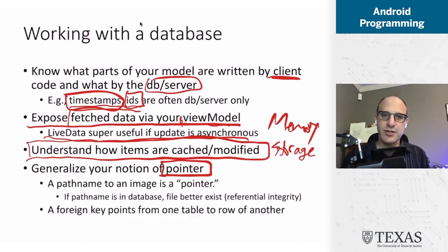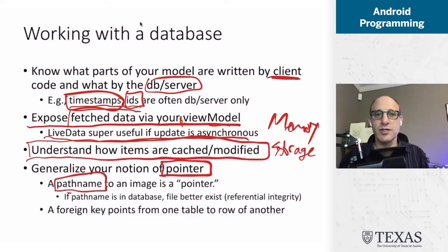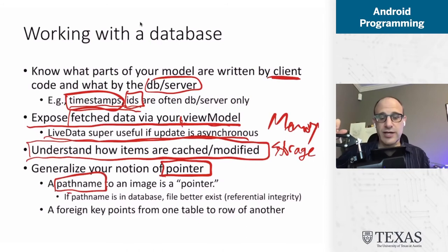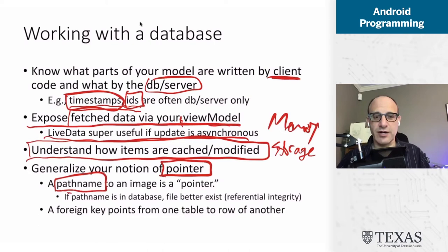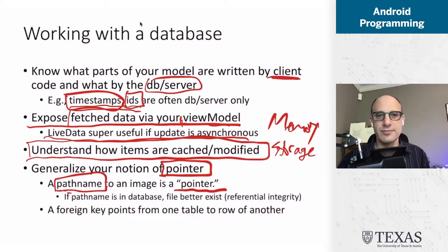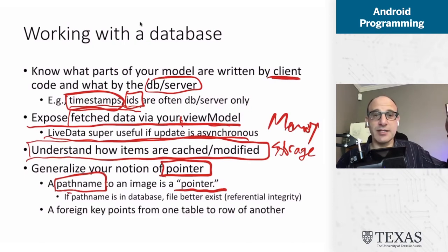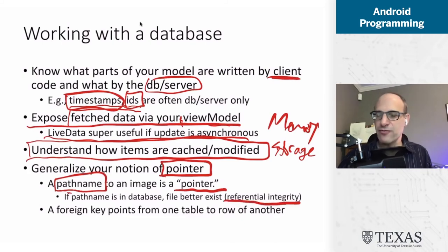In particular, one of the things we're going to be doing is manipulating images. Those images are going to be stored either in a local database or in a cloud database. In either case, they're represented by path names, and those path names are stored in other objects. That path name — whether it refers to a local file or a cloud file, in which case a URL — is still a path name and is a form of a pointer. It's identifying a piece of data that we can fetch independently. Whenever we have pointers in our database program, we have to worry about referential integrity.